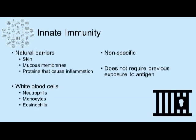Let's talk about innate immunity. We have natural barriers such as your skin, mucous membranes, and proteins that contribute to inflammation in the presence of a foreign body. There is also a cellular component of the natural immune system, which includes neutrophils, monocytes, and eosinophils — all granulocytes that act as phagocytes in the innate immune system.